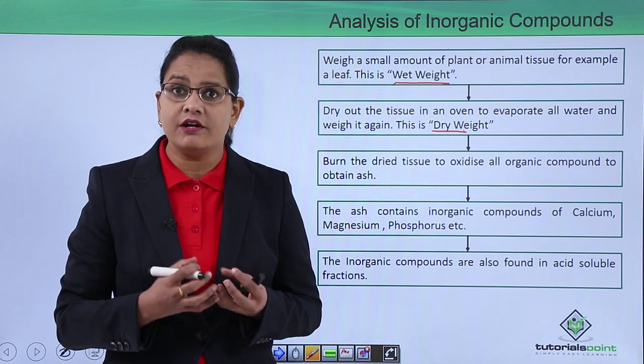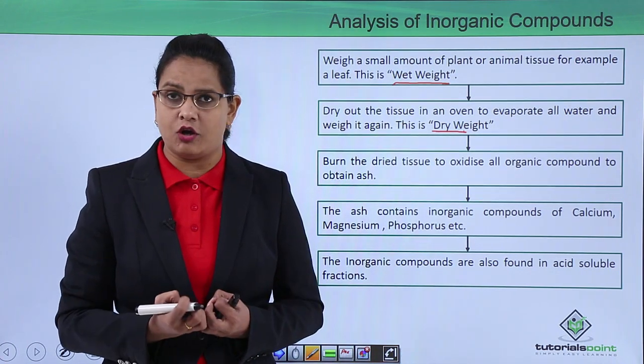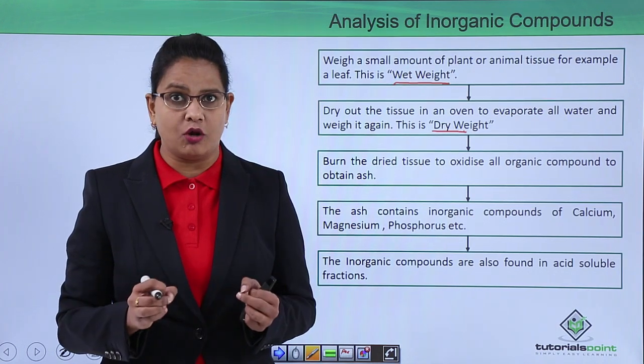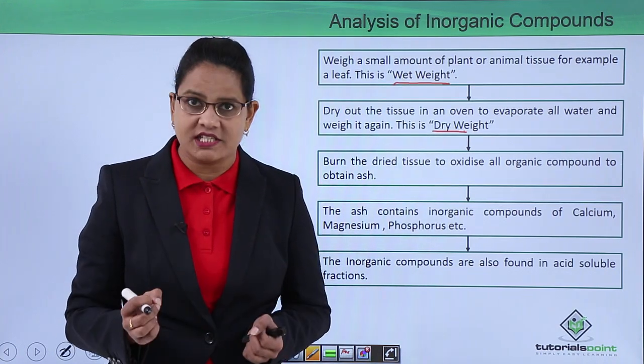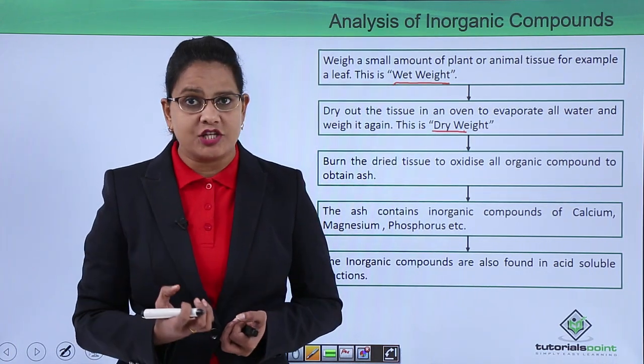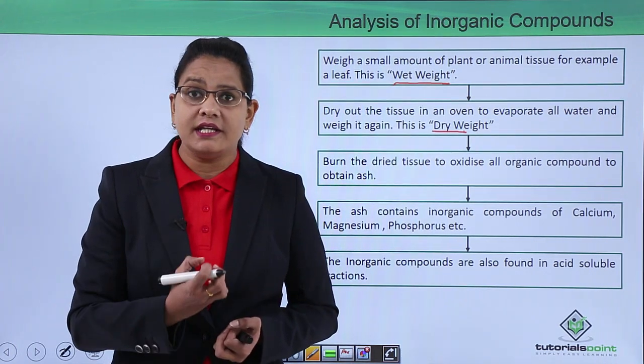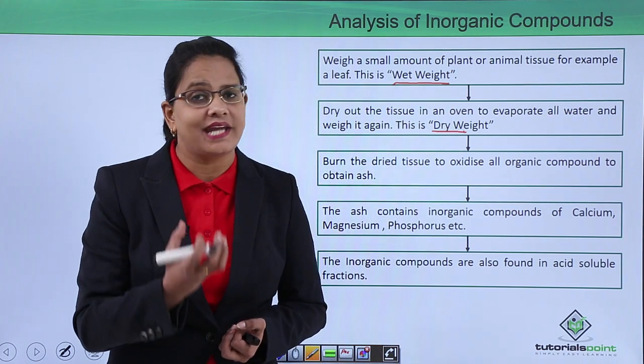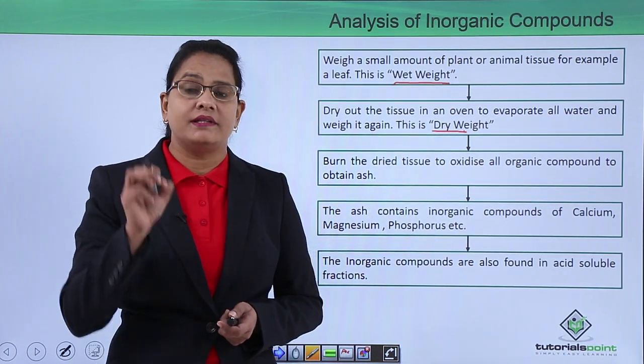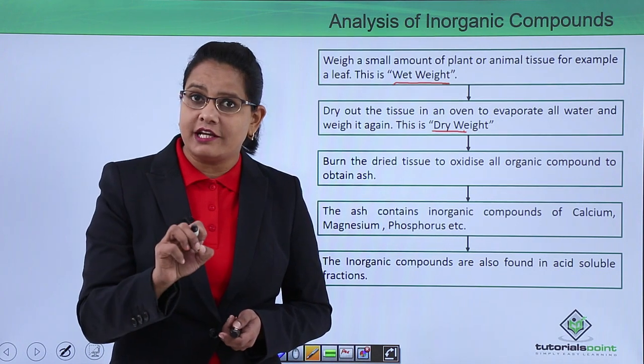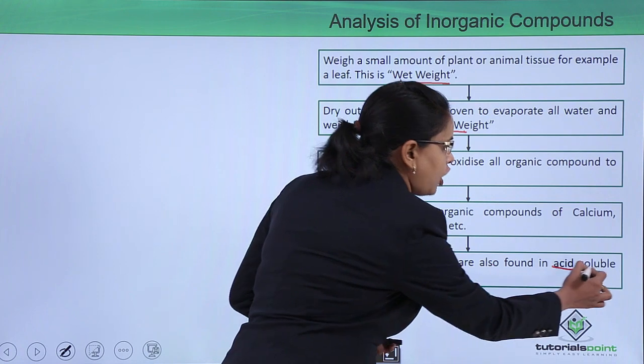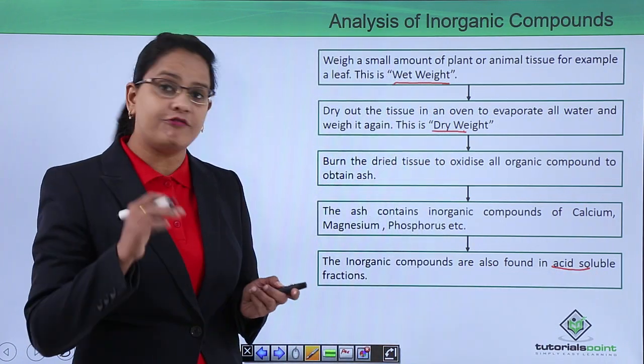Why do we burn the tissue? Because both organic and inorganic components are present, but we want to analyze inorganic components. So we oxidize the organic components by burning them. We obtain ash. This ash contains the inorganic components like calcium, phosphorus, and magnesium. Also, it should be remembered that these inorganic components are found in the acid soluble fractions.